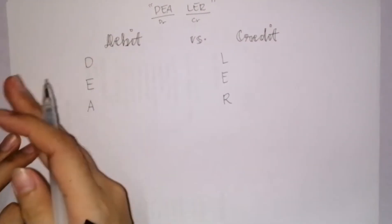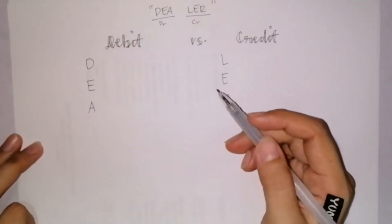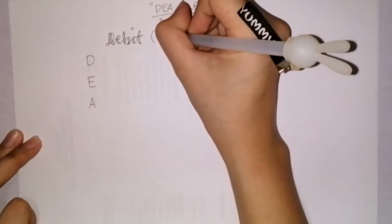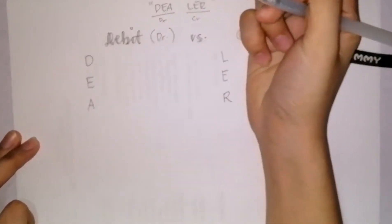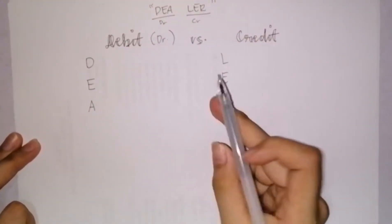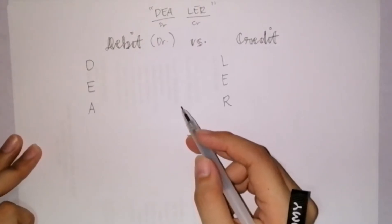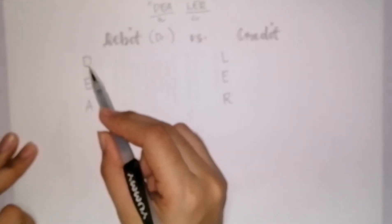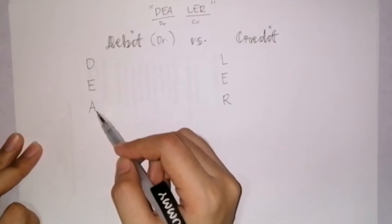Let's start with the debit. The acronym for debit is DEA — D, E, and A.